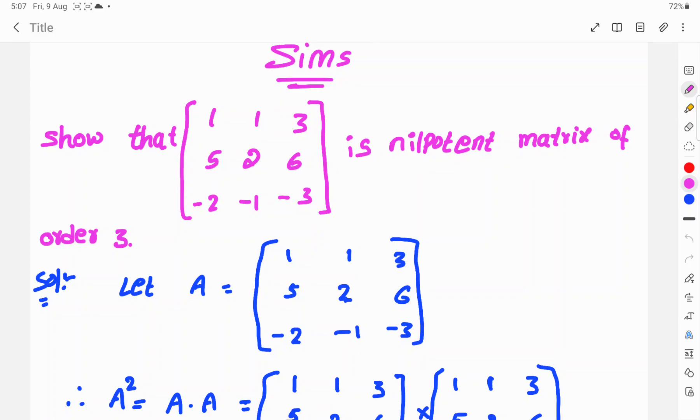So, let's see the solution. Let A be the given matrix: 1, 1, 3; 5, 2, 6; -2, -1, -3.